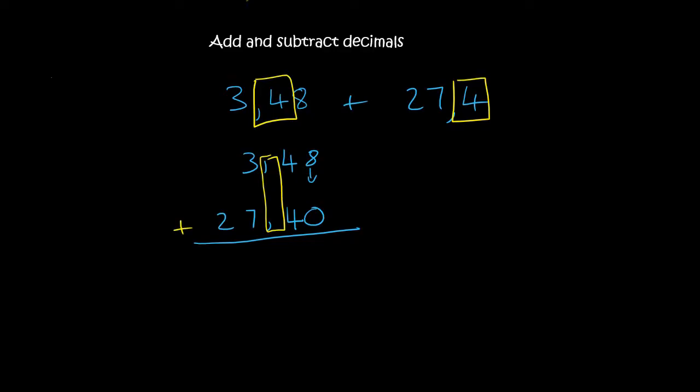Now you can just add. So 8 plus 0 is 8. 4 plus 4 is 8. The commas. 3 plus 7 is 10. And then 3. So you get 30.88.